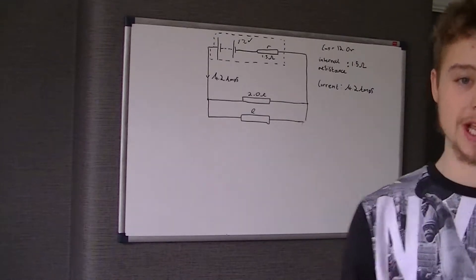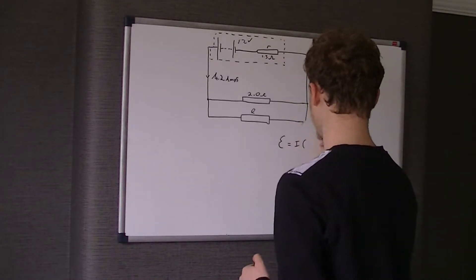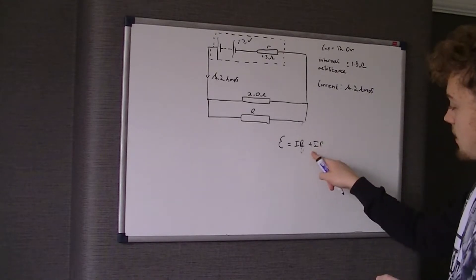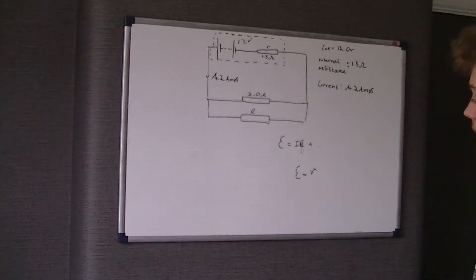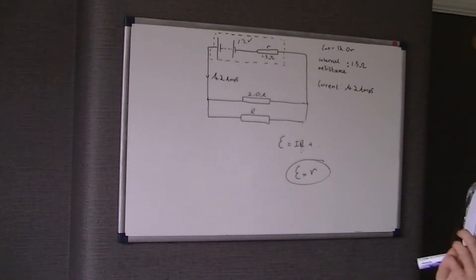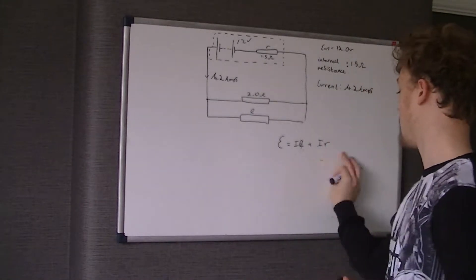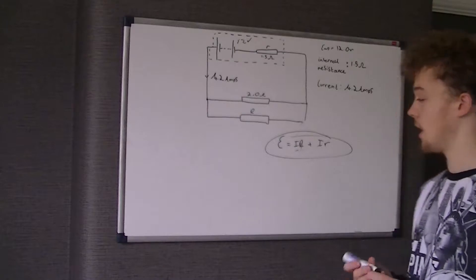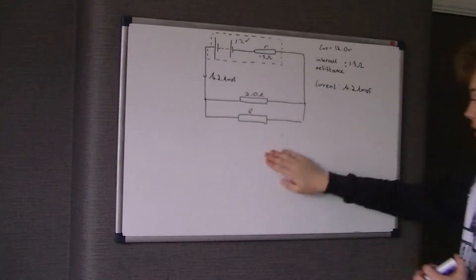It's not the potential difference, even though it is measured in volts. The equation for electromotive force is E = IR + Ir, where little r is the internal resistance. If there is no internal resistance, then Ir = 0, so EMF equals IR, which means EMF equals potential difference. But because there is internal resistance, EMF equals the potential difference plus the potential difference across the internal resistor inside the battery.